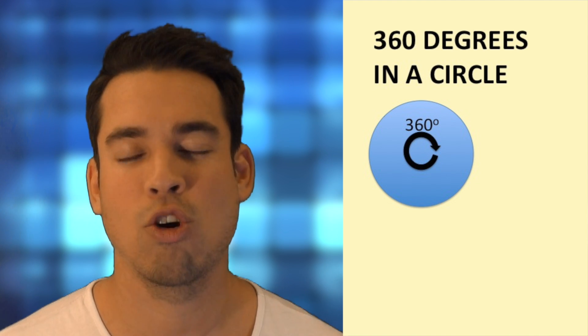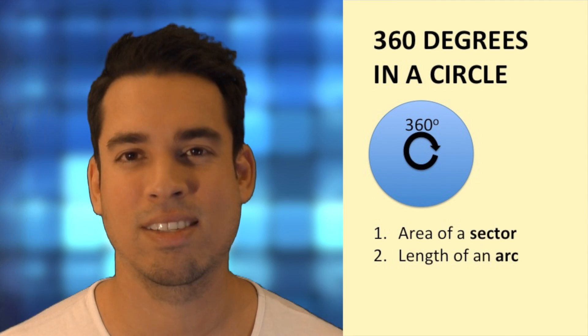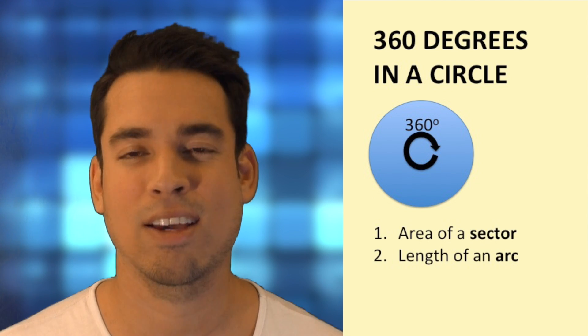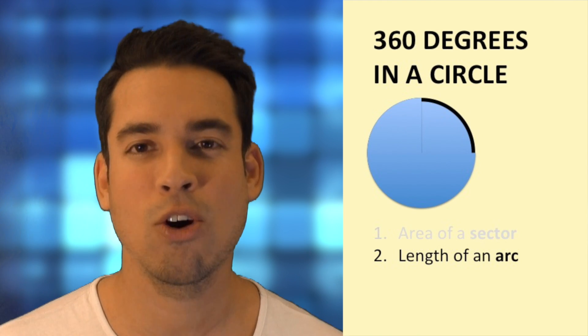So now we're going to use the notion that there's 360 degrees in total around a circle to calculate both the area of a sector and the length of an arc. So here's how we do it. Let's say we want to calculate the length of an arc and we know